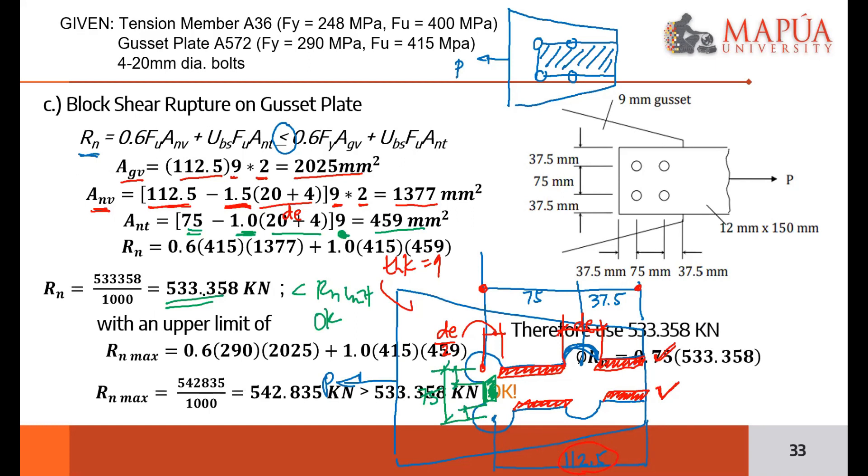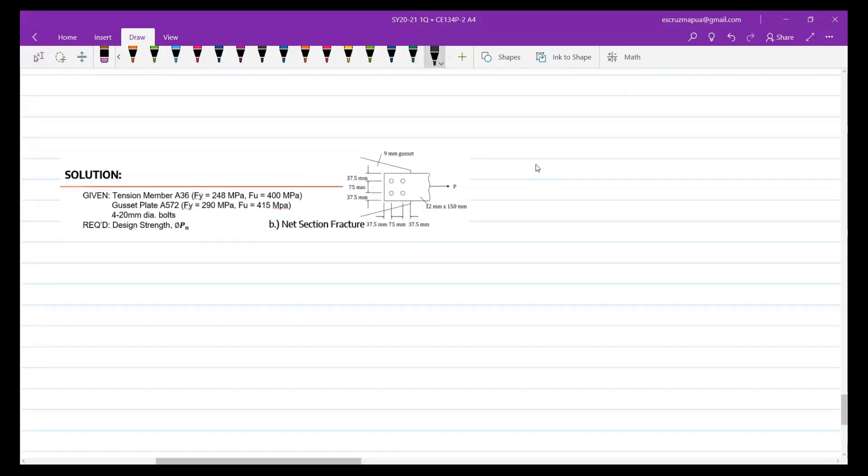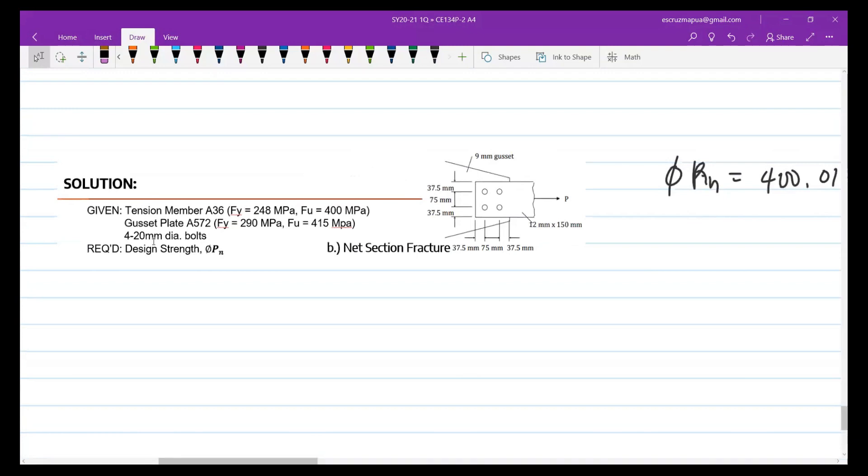When you got the 533 Rn, multiply by 0.75, that's your design strength. So that's the answer, 400.019. So this is now your answer for block shear rupture of the gusset plate. Now, we said our phi Rn is 400.019, that's what we solved. This is for the gusset plate. This time, let's solve the tension member to see the difference.